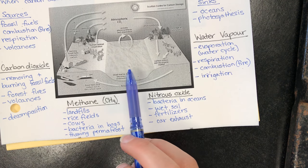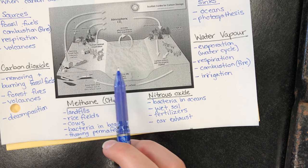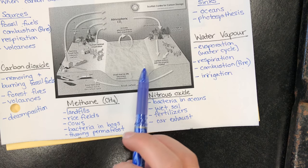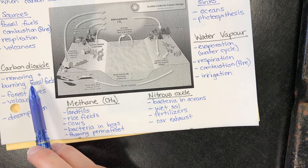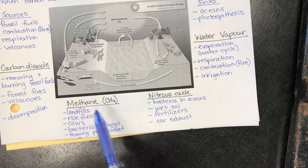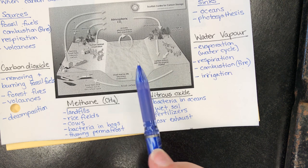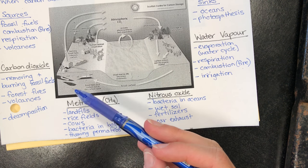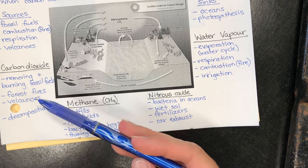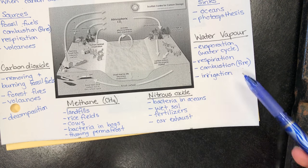Make sure that you know some examples of both natural and anthropogenic sources for each one. Natural being part of the natural greenhouse effect, happens naturally on earth. And anthropogenic being human caused, so that would be things like removing and burning fossil fuels, car exhaust, irrigation, that kind of stuff.